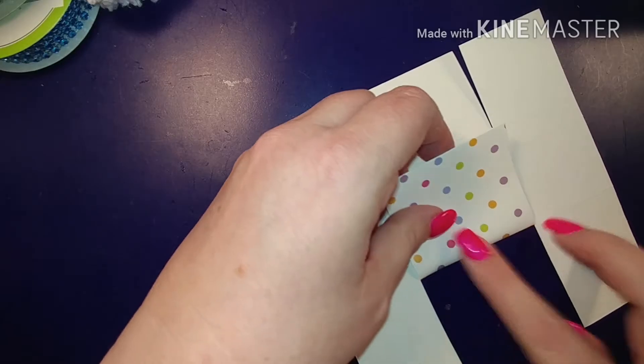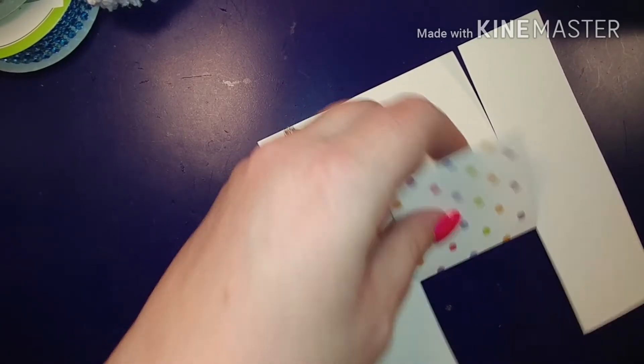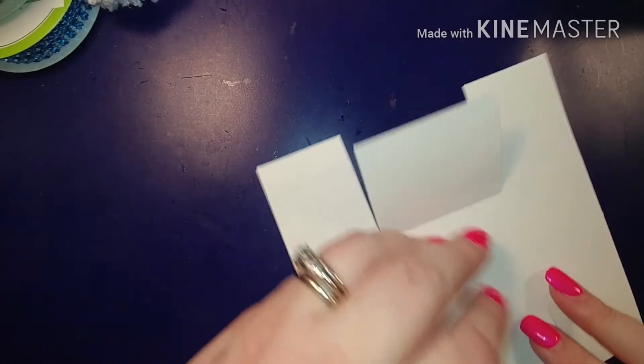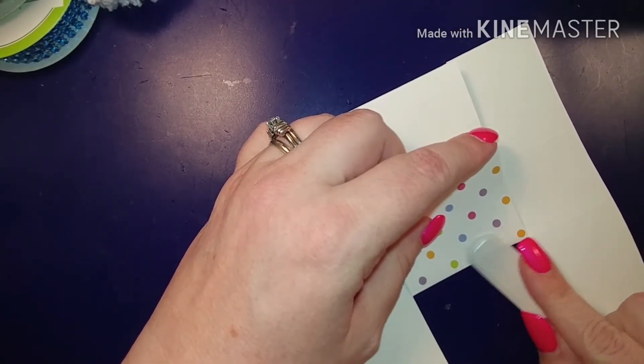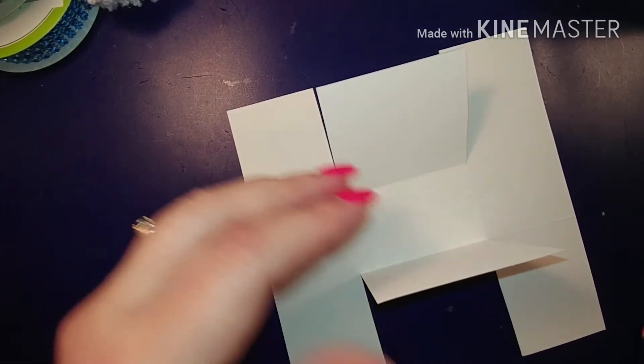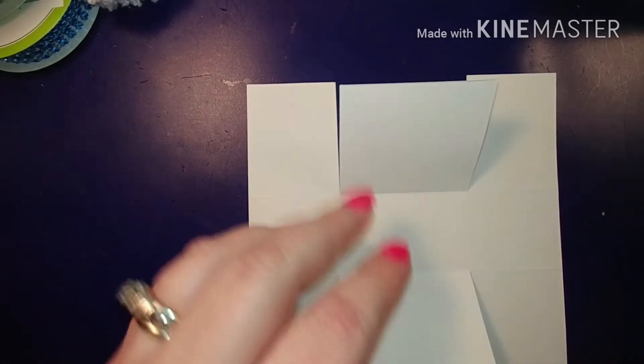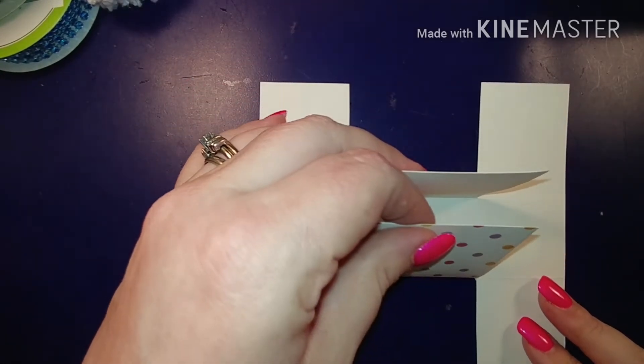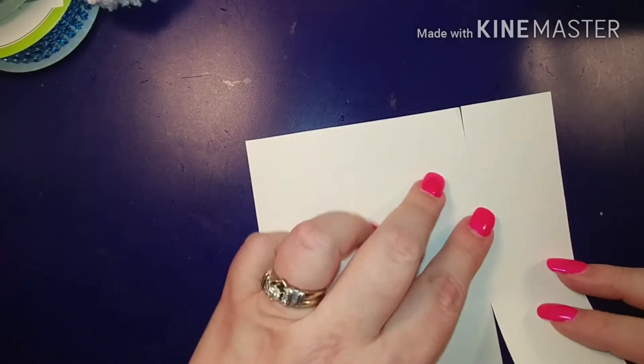So then we are going to burnish our big piece in the middle. Now the only thing you have to keep in mind is if there's any kind of design, that's going to get flipped upside down or the writing is going to be flipped around. You're just going to have to watch on which way you score and turn your paper. So that's going to be our middle. So you see how small it's going to be.